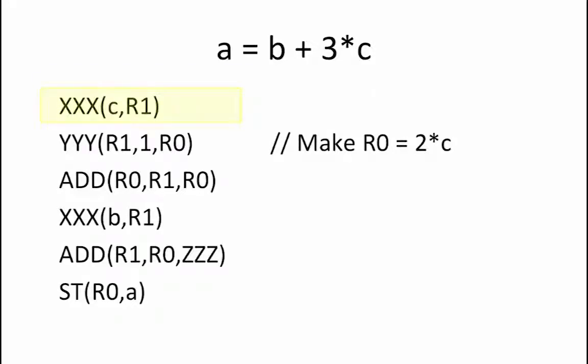We begin with XXX, which is the first instruction. The first instruction is trying to put the value of C into register R1. Since C comes from memory, that means that instruction XXX must be a load operation, where C is the address of the variable to be loaded.